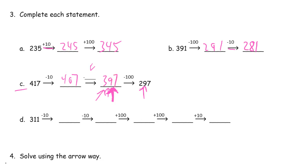And we can just check that. 397 subtract 100, 297. That's great. So now we know how to figure out the difference here. And it looks like it's minus 10. 407 to 397.